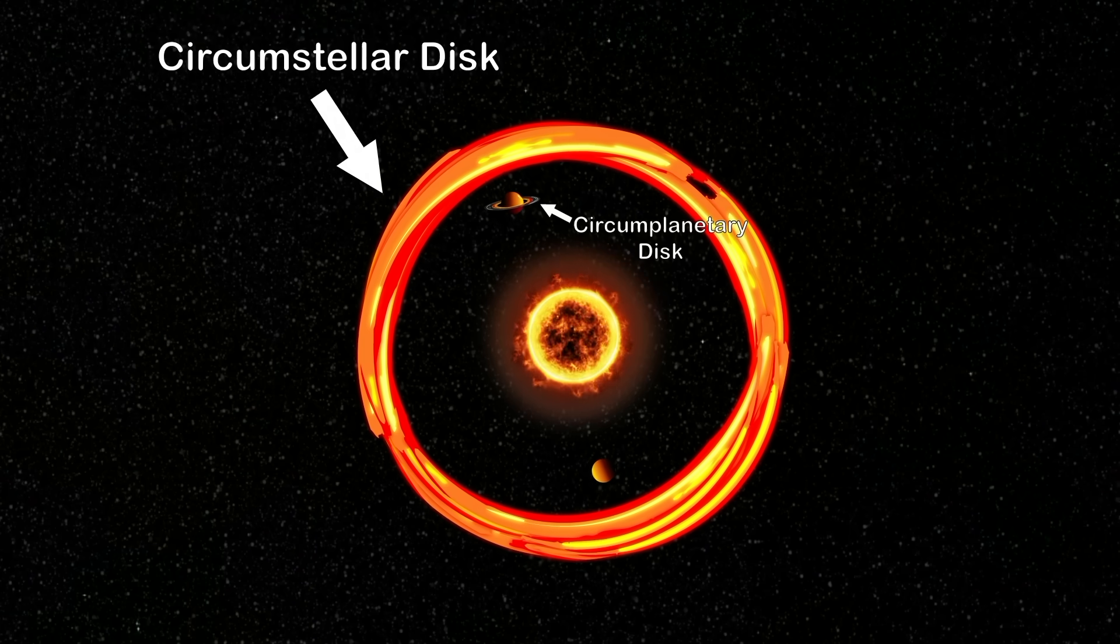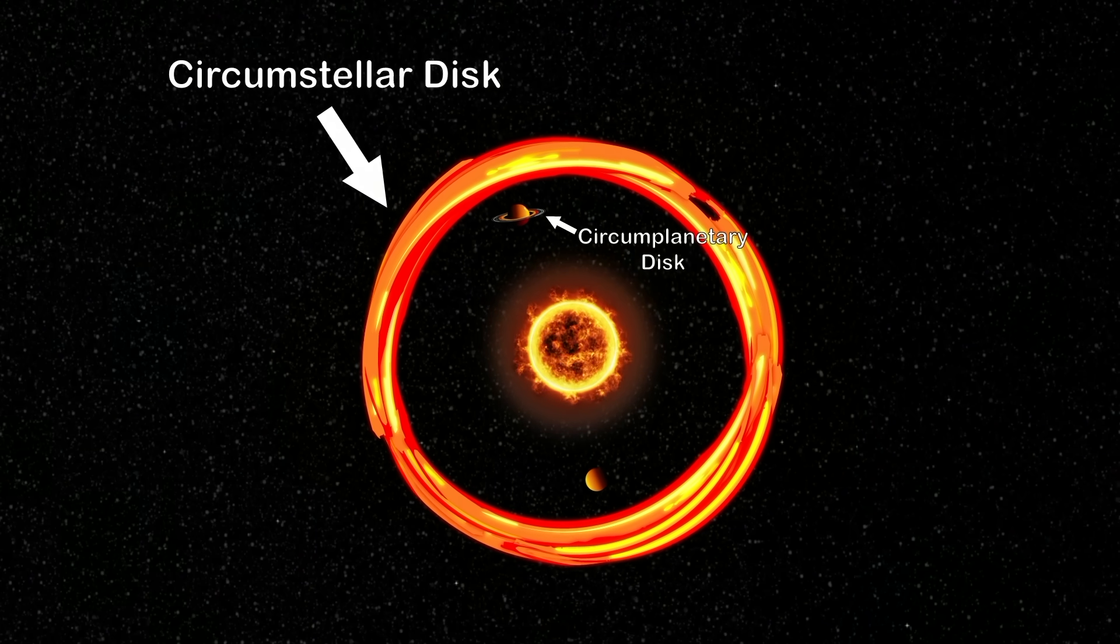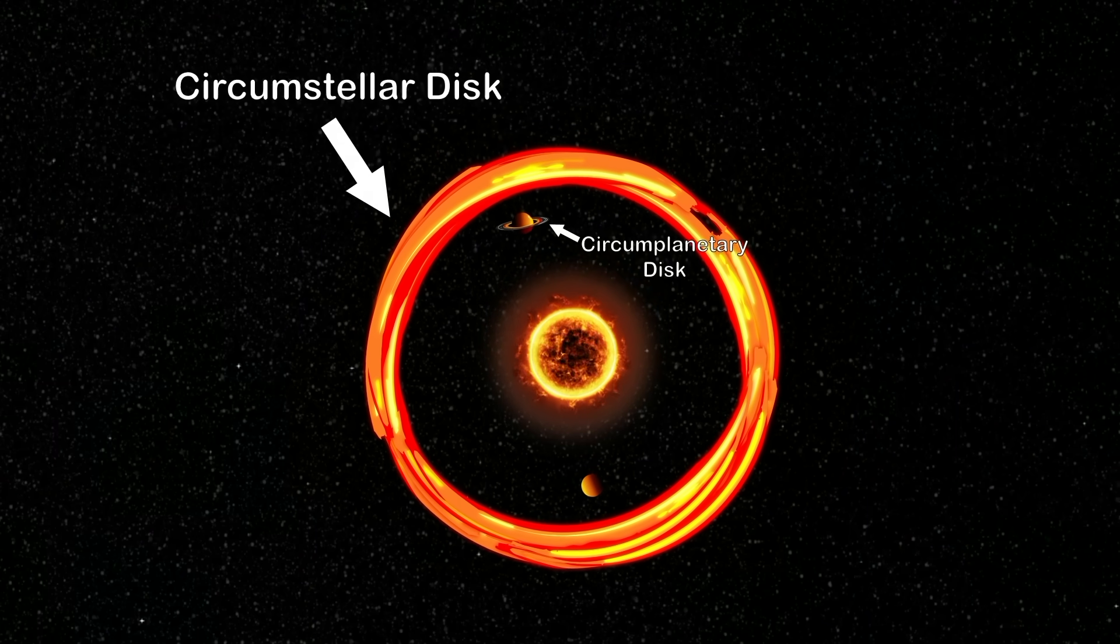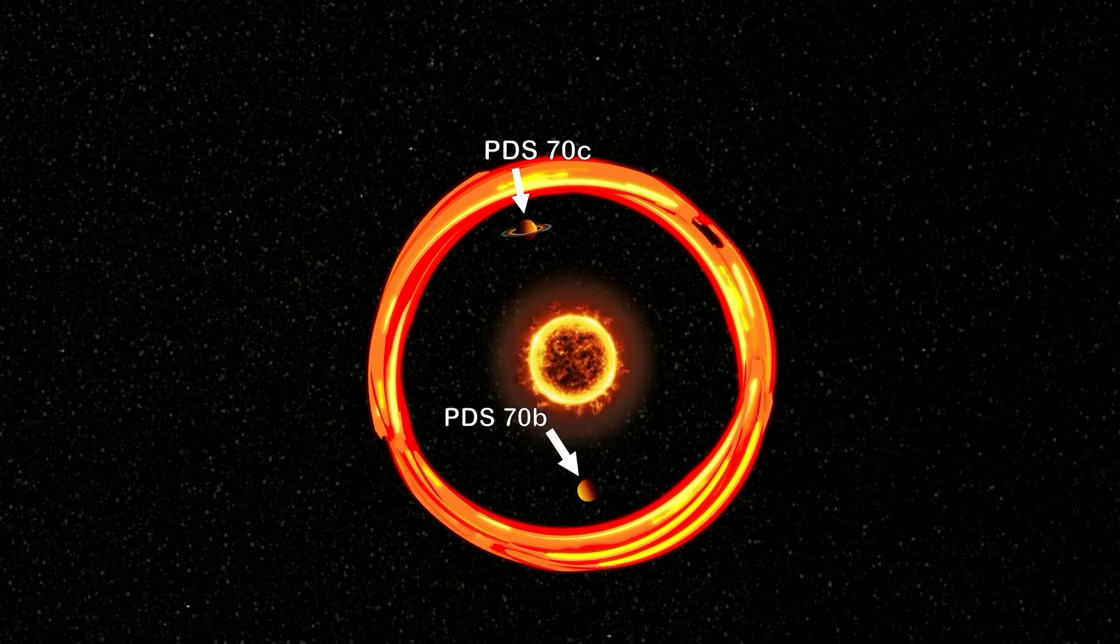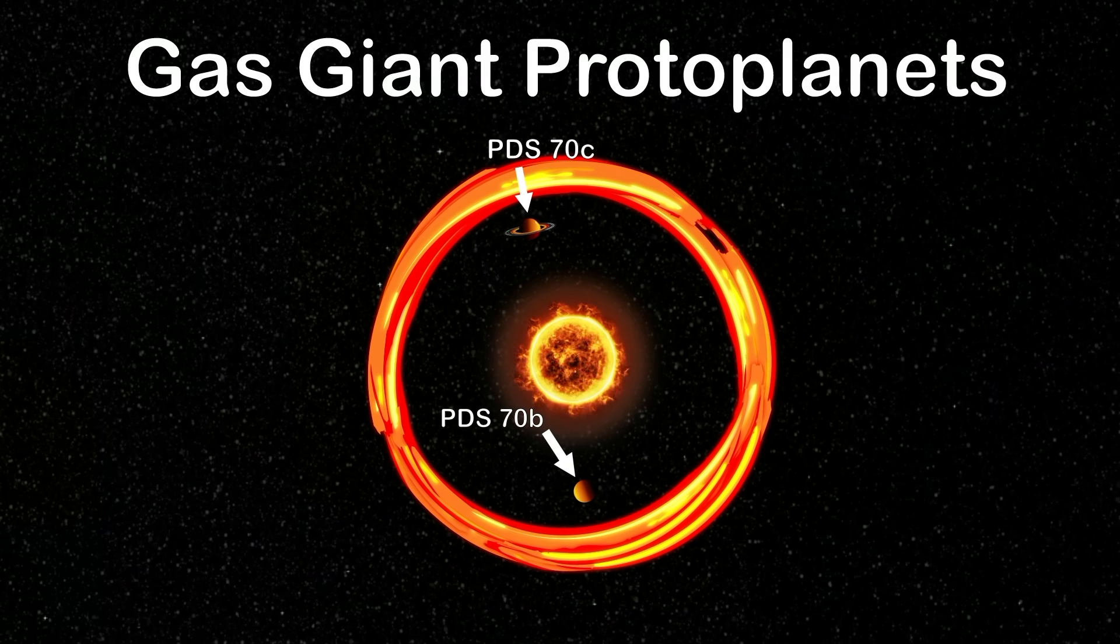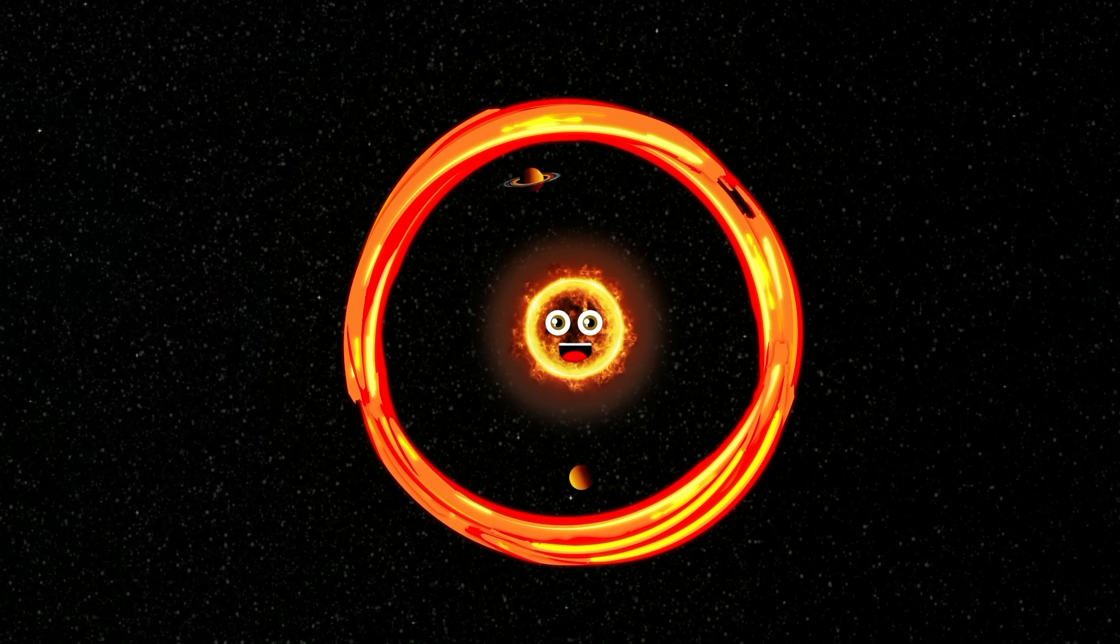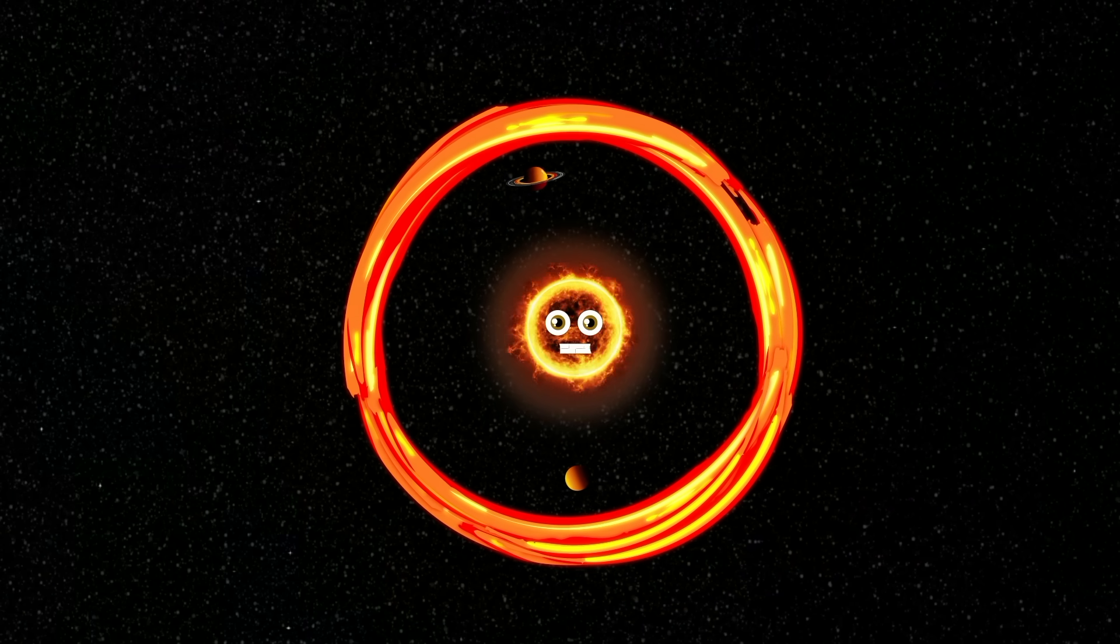Both the circumstellar and circumplanetary disks are possibly forming exomoons like Jupiter formed his. Both planets are young gas giant protoplanets. We can learn how planets formed by listening to scientists.